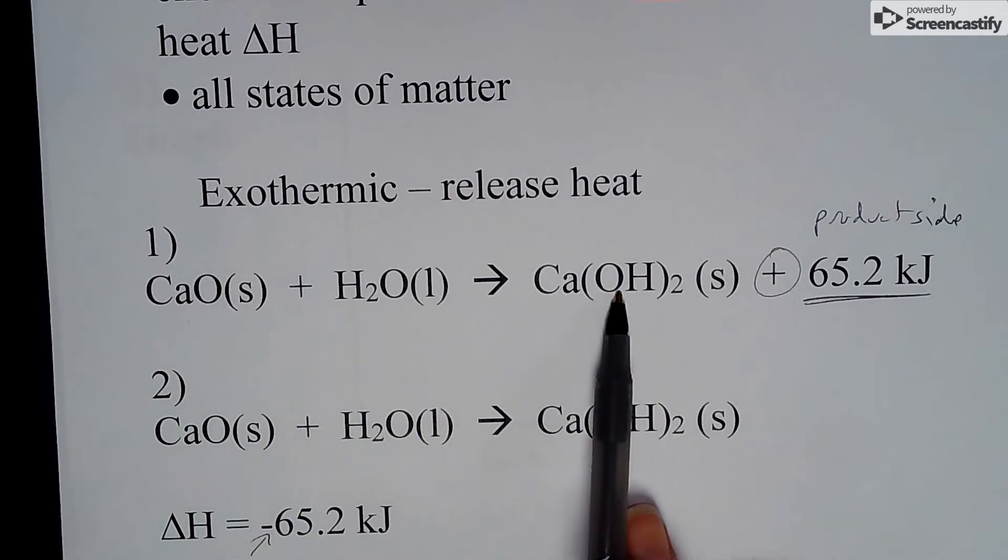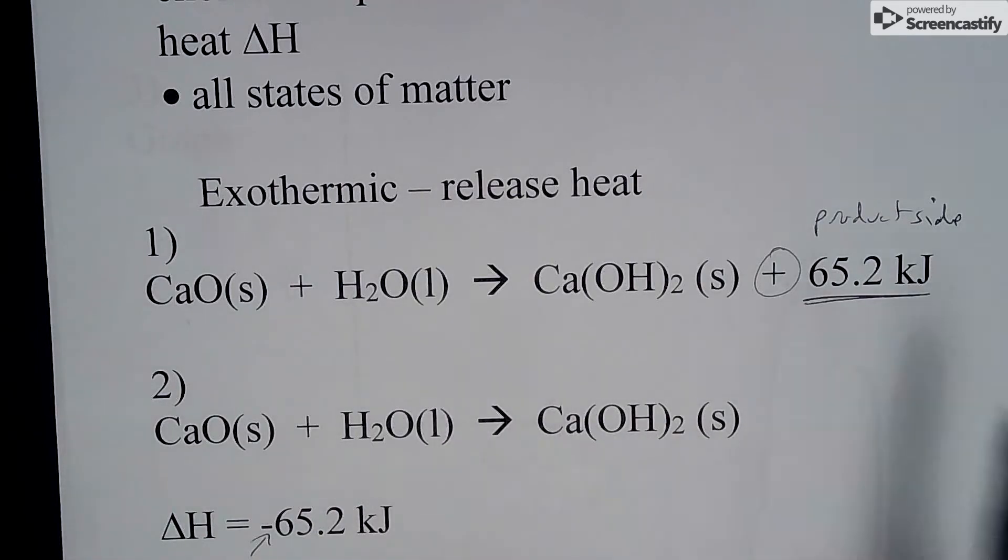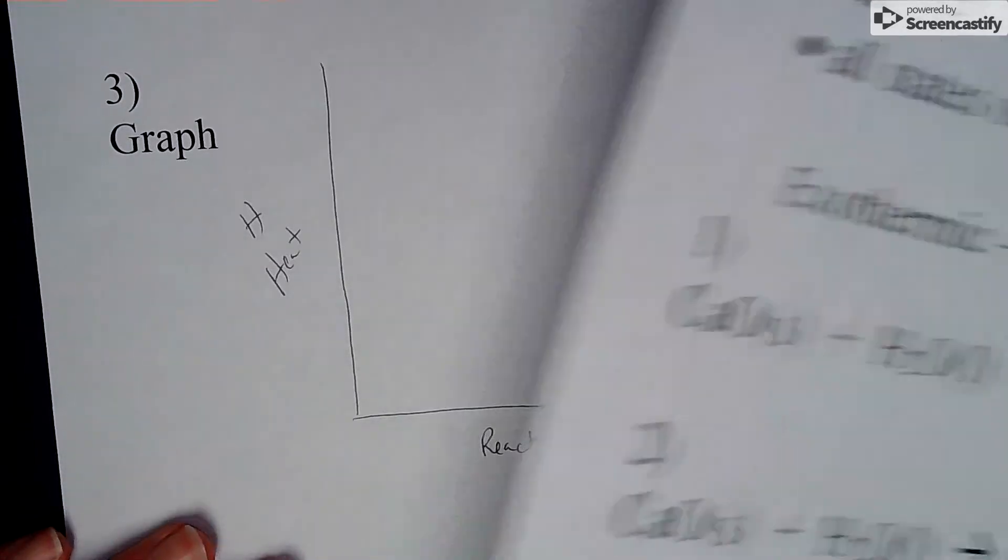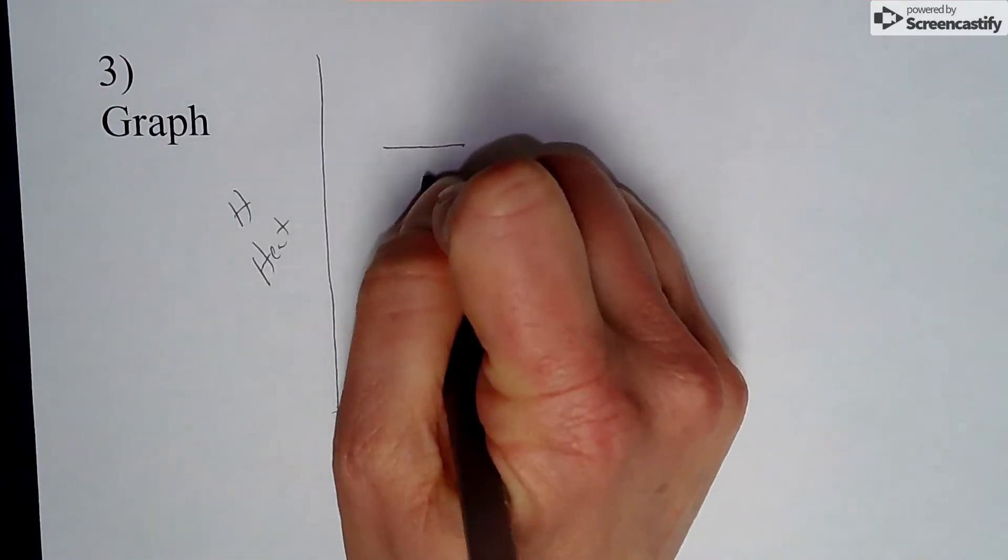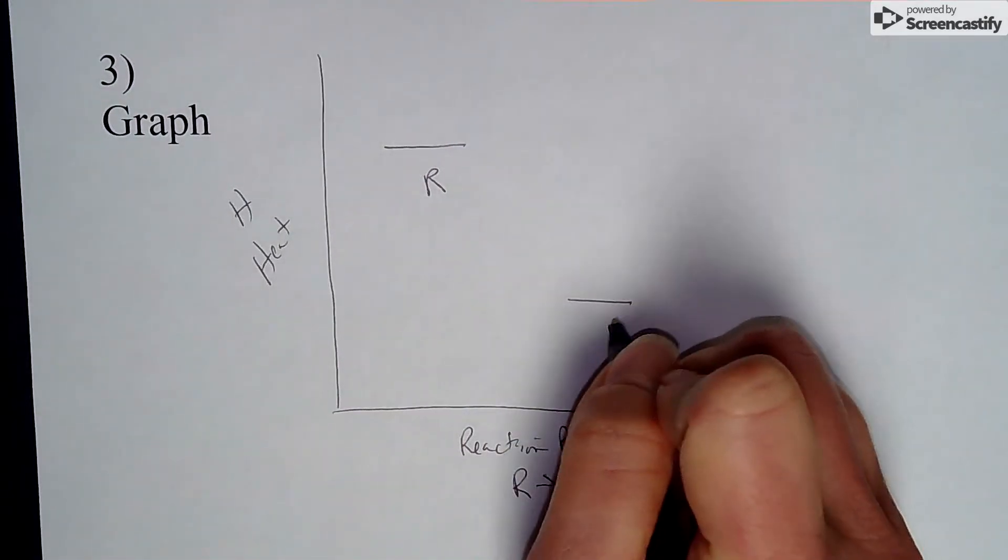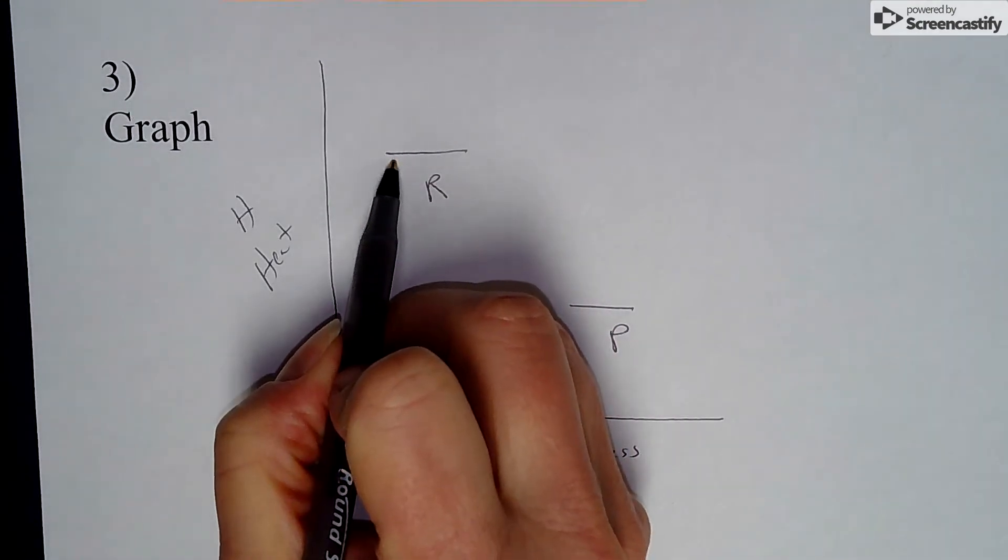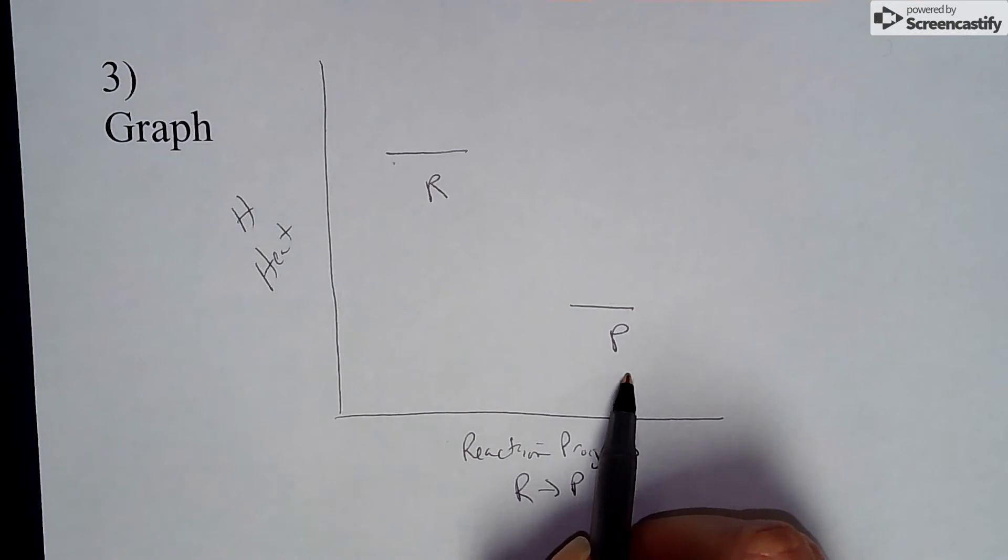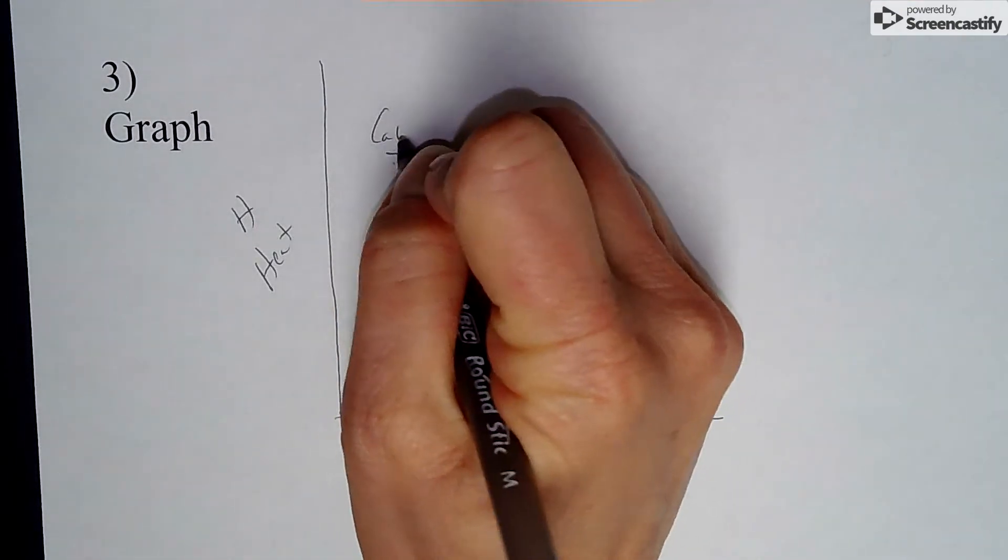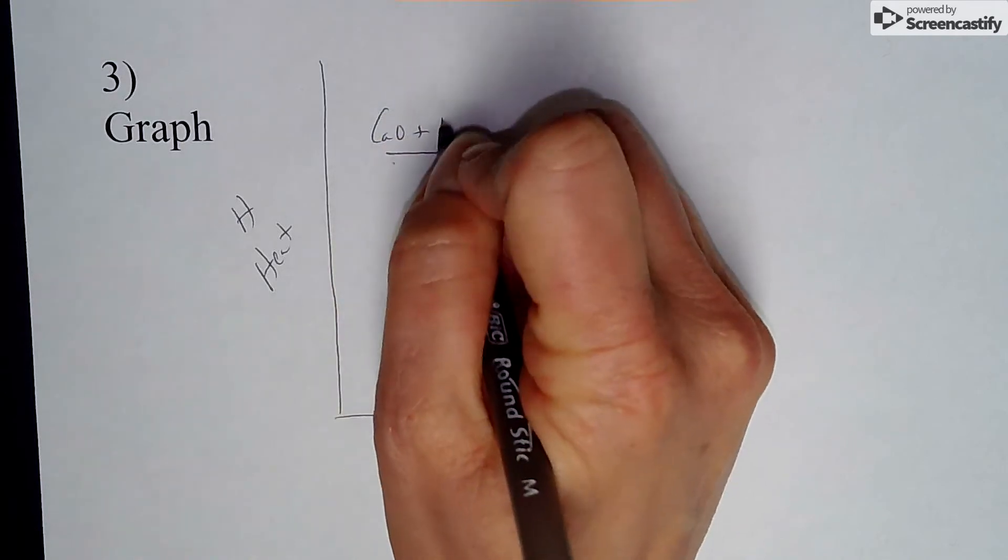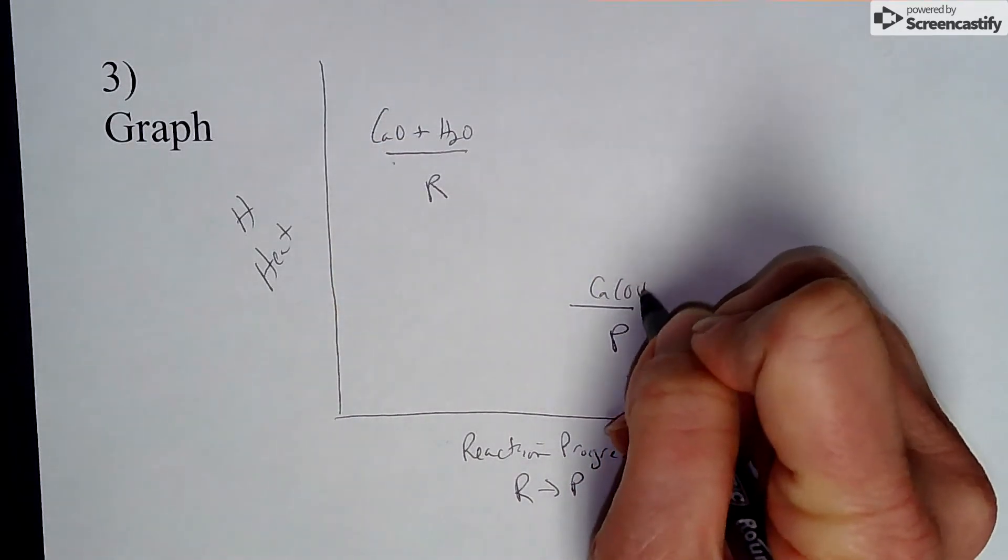I have these two reactants and they become this product. In an exothermic reaction, I need to show that heat is being released. The way we're going to show that is we're going to have reactants higher on this graph than the products. That means I have more energy as a reactant than I do as a product. My reactants in this equation are calcium oxide and water, and my product is calcium hydroxide.